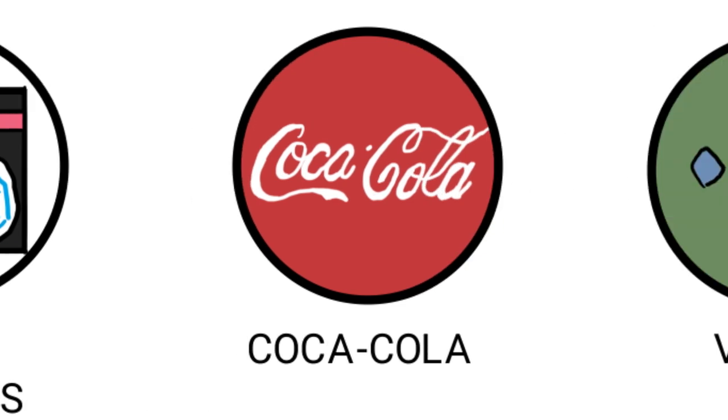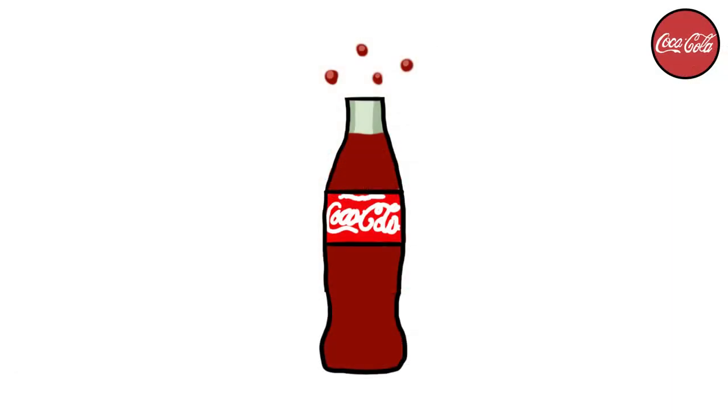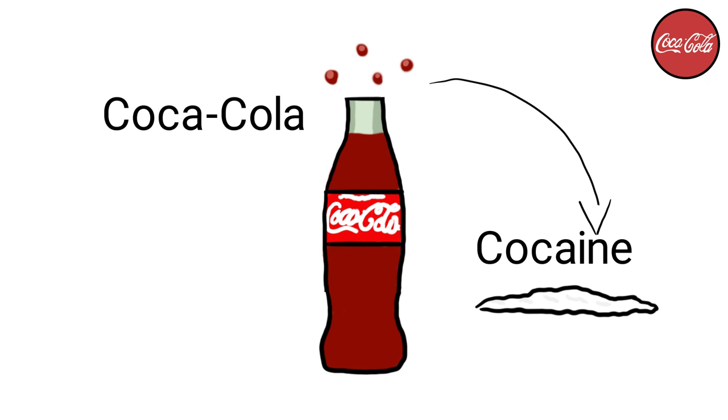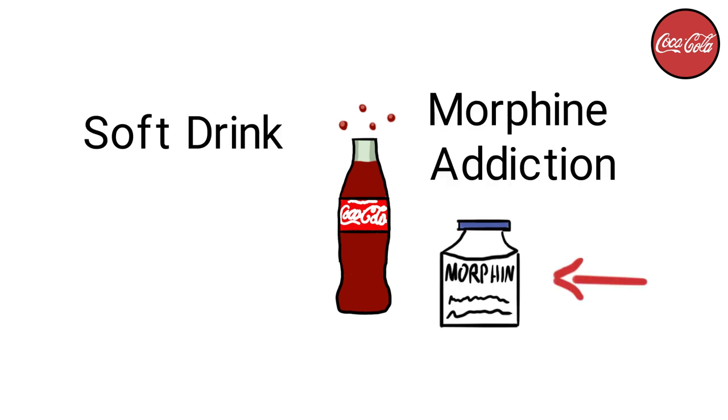Coca-Cola. Everyone knows the old rumor that Coca-Cola used to have real cocaine in it, and that rumor is true, up until 1904, that is. Ironically, the now popular soft drink was initially created to treat morphine addiction.